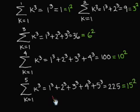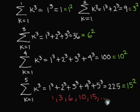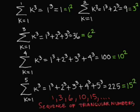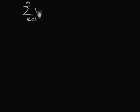And we should be already very familiar with this sequence: 1, 3, 6, 10, 15. The sequence is the sequence of triangular numbers as we have learned from the first lecture. So we can speculate that the sum we are trying to find is: the summation from k equals 1 to n of k to the cube is equal to t sub n squared.